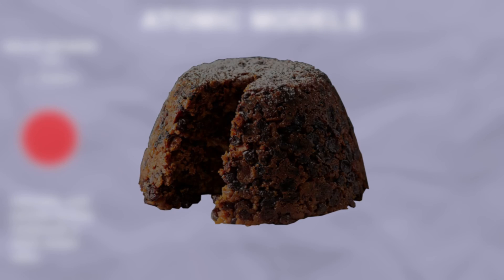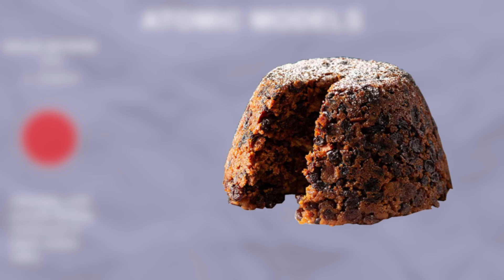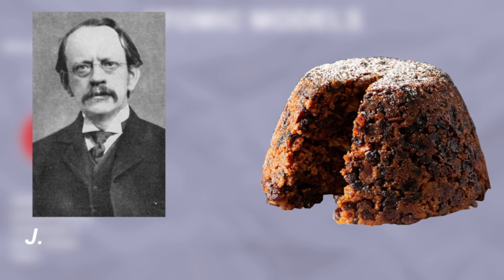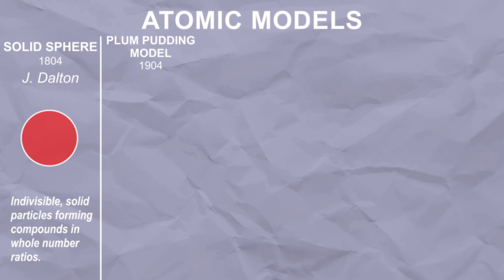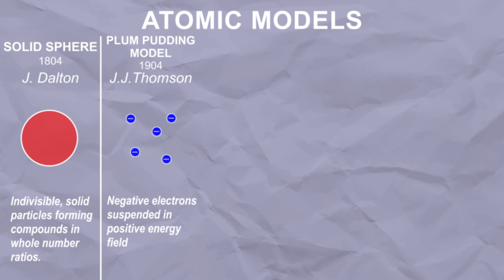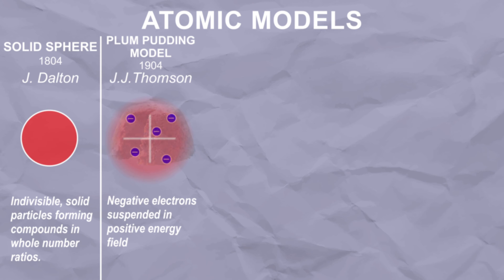Next, we have a model of atom called the plum pudding model, devised by British scientist J.J. Thomson. It takes into account the existence of electrons — negatively charged particles — and since atoms have no net electric charge, there has to be some positive charge counteracting electrons. So negative electrons are like plums, surrounded by a positively charged pudding field.